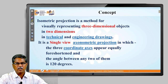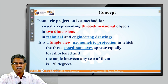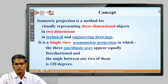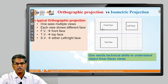In reality, it is a single-view system, in contrast with orthographic projection which is a multiple-view projection. It is a single-view axonometric projection, wherein the three coordinate axes appear equally foreshortened and the angle between any two of them is 120 degrees. We will understand what we are doing in isometric projection in the next slide.